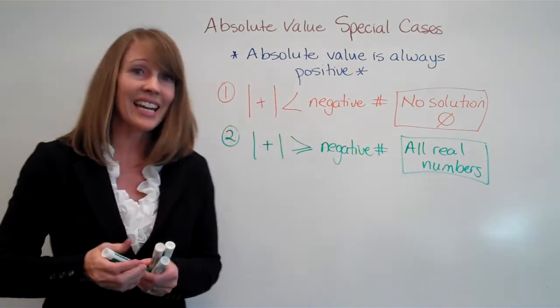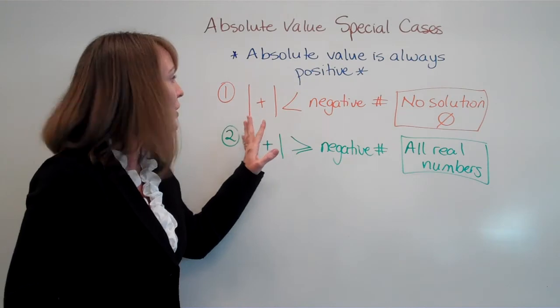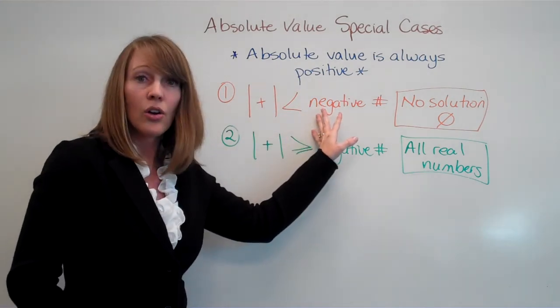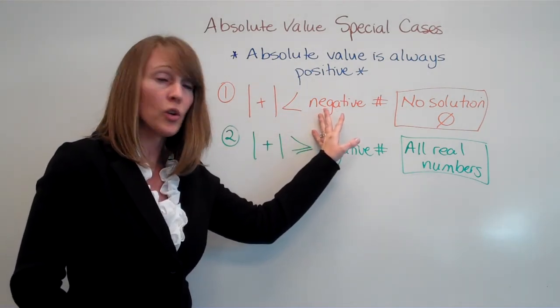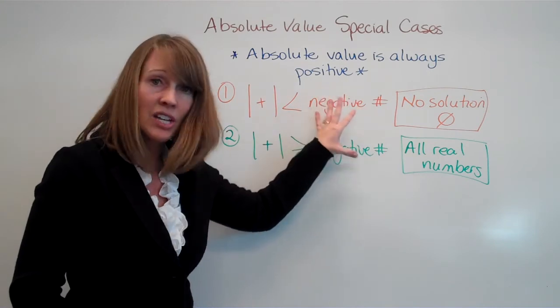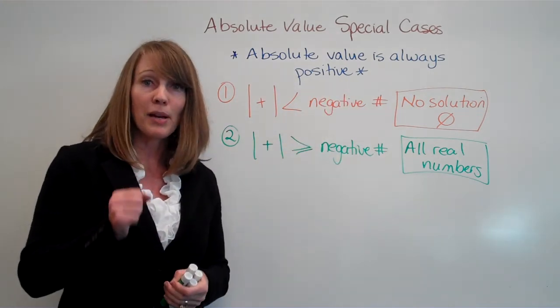So the trick again is to look to see, once your absolute value is alone, if it is less than or equal to, greater than, or greater than or equal to a negative number, then you're going to get a special circumstance.